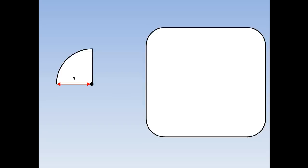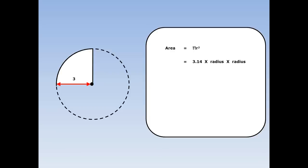Here we've got a quarter of a circle. This length is 3 centimetres. So again, I'm going to work out the area of the whole circle and divide by 4. The area of the whole circle is pi r squared, which means 3.14 times the radius times the radius.